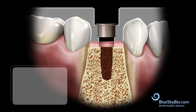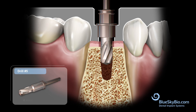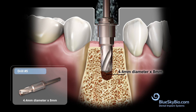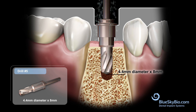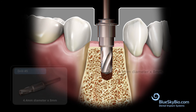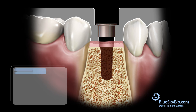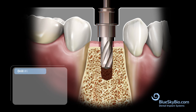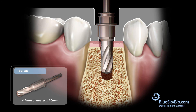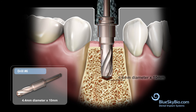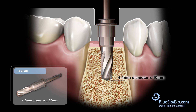The 8 millimeter long drill is inserted until centered by the master tube; activate and advance until stopped. The 10 millimeter long drill is inserted until centered by the master tube; activate and advance until stopped by the master tube. The osteotomy procedure is now completed.